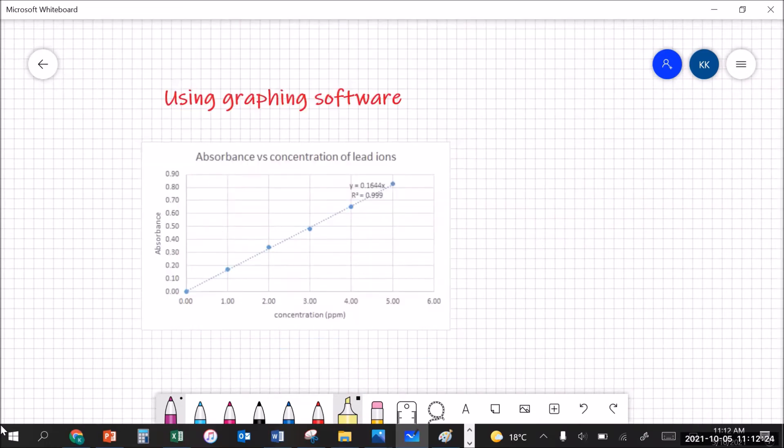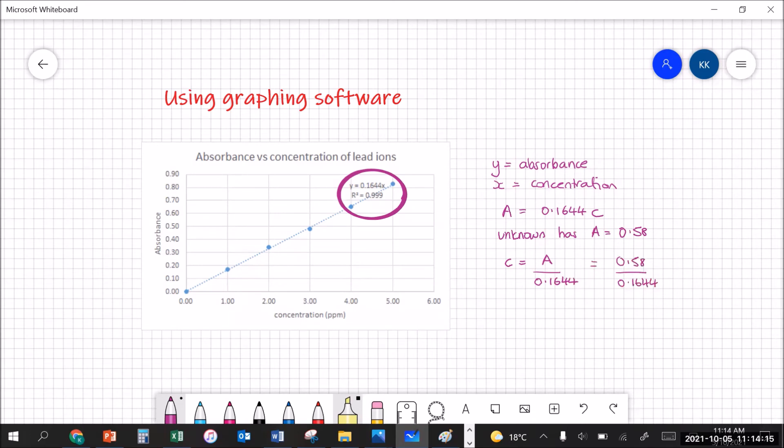But we have technology to help us. So if we use Excel or some other graphing software to graph our data we can get an equation of the line. Here our equation is y equals 0.1644x. Of course y is equal to absorbance and x is equal to concentration. So we can rewrite that equation as A equals 0.1644C. Now our unknown has absorbance is equal to 0.58. We can rearrange the equation. We can substitute in the absorbance. Run that through the calculator and we get 3.5 parts per million.